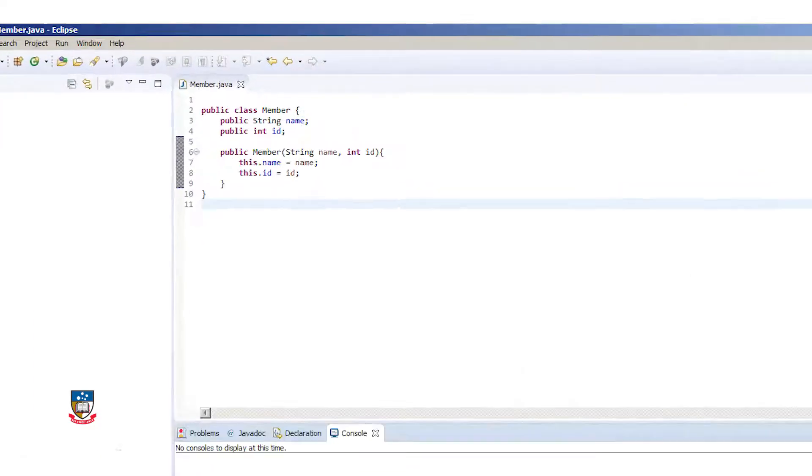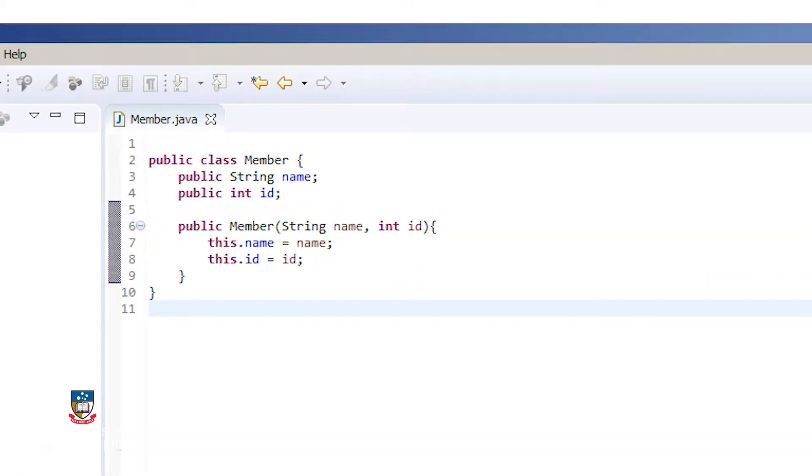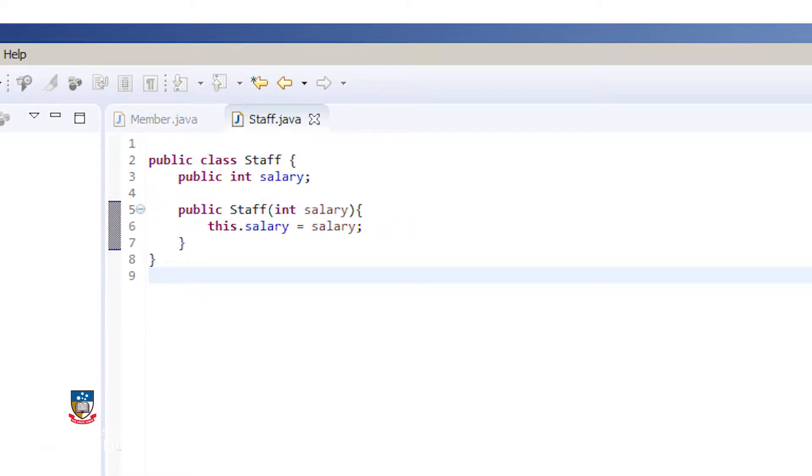Here, I have a simple class called member. This class has two member variables declared publicly, name and id. I have another class called staff, which has a member variable called salary. In Java, the keyword to declare the inheritance relationship is extends.